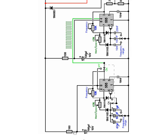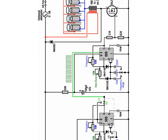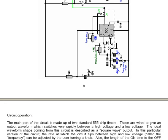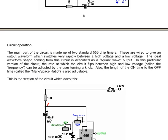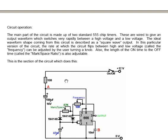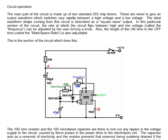It's not a very serious method of decoupling the 555 chips but it is quite effective in this circuit. It's certainly sufficient for the needs of this particular operation. The main part of the circuit is made up of these two 555 timer chips. They're wired to give an output waveform which switches very rapidly between high voltage and low voltage. The ideal waveform shape coming from this circuit is described as a square wave output. In this particular version of the circuit the rate at which the circuit flips backwards and forwards between high and low voltage called the frequency can be adjusted by the user turning a knob. Also the length of the on time to the off time which is called the mark-space ratio is also adjusted by just turning a knob.